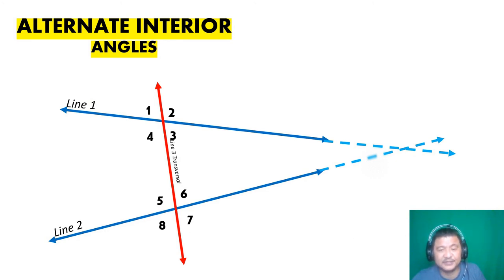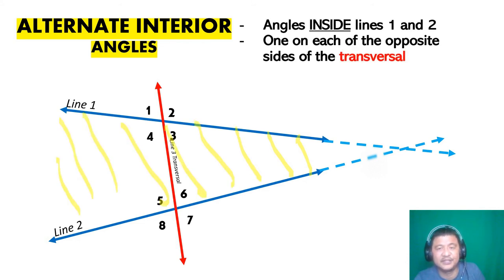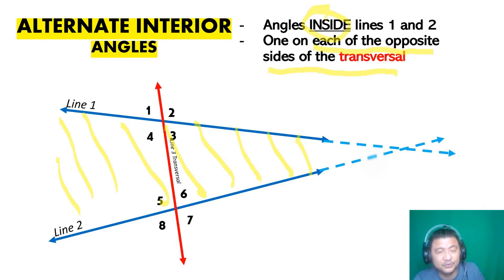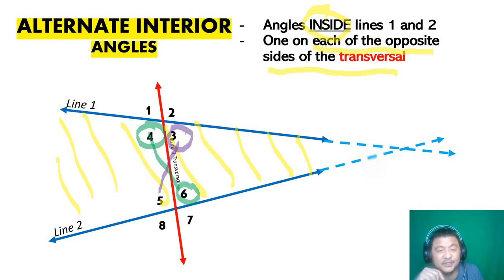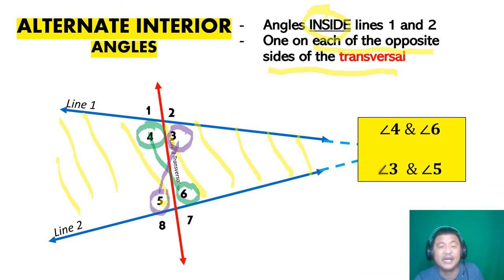Alternate interior angles: the focus is on interior angles — just the ones inside. They should be inside, and one on each of the opposite sides of the transversal. The partner of angle four is not angle three and not angle five — the partner is across the other side: angle six. And the partner of angle three is angle five. So the two alternate interior angle pairs are angle four & six, and angle three & five.